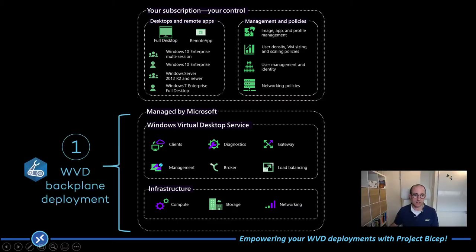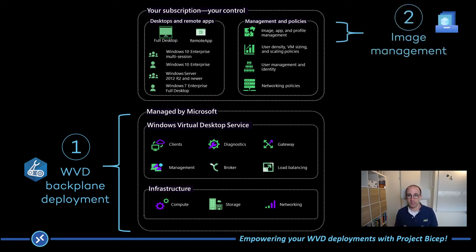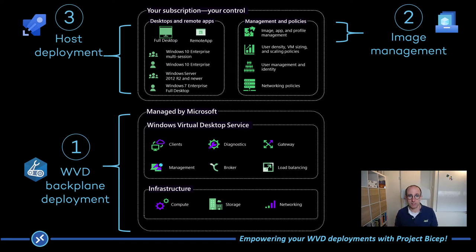The first step we'll take is deploying the Windows Virtual Desktop backplane — laying the foundation. In this step, we're using Bicep code to create host pools, application groups, and workspaces, but also surrounding infrastructure like networking, profile storage containers, and key vaults. In the second step, we'll deploy image management. The same Bicep deployment will also deploy a fully functional Azure Image Builder environment, which allows us to create template images in an automated way. The last step is the actual host deployment, based on the backplane from step one and the template image from step two, adding session host services to the host pool.